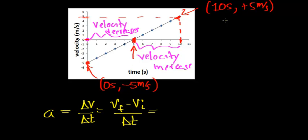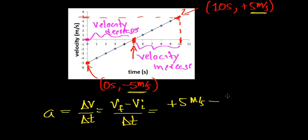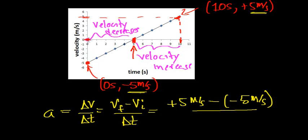In this case I'm going to use a final velocity of positive five meters per second and an initial velocity of negative five meters per second. So this is going to be the final velocity of five meters per second minus the initial velocity of negative five meters per second, divided by the time it takes to go from negative five meters per second to five meters per second, which corresponds to a time interval of ten seconds.